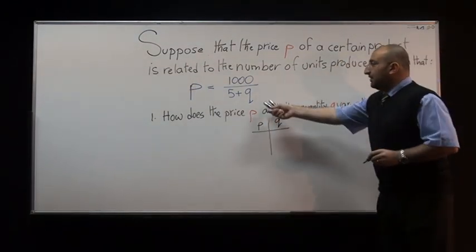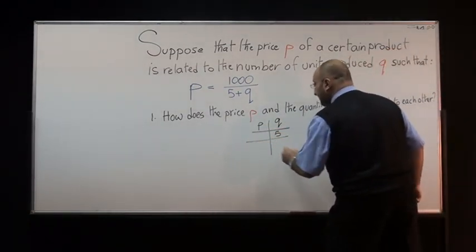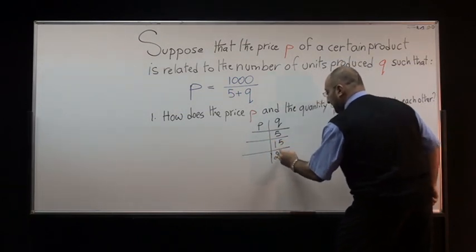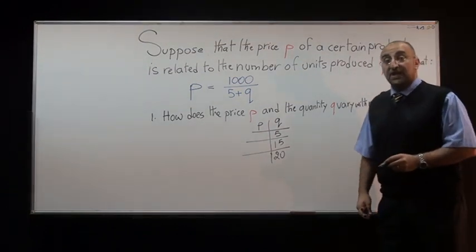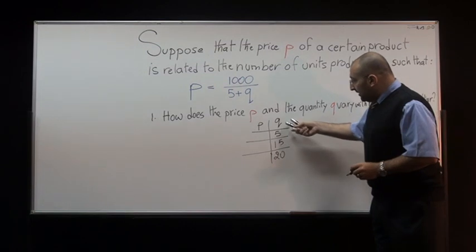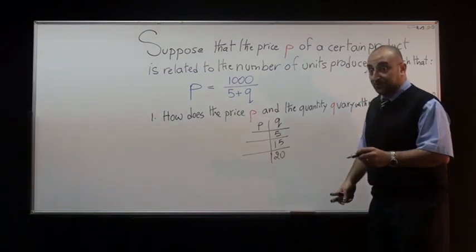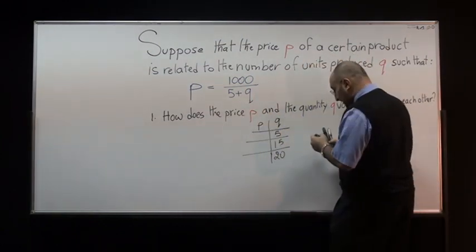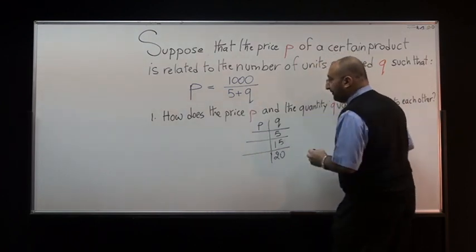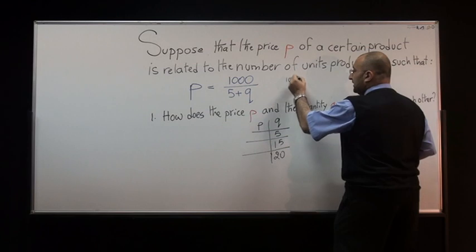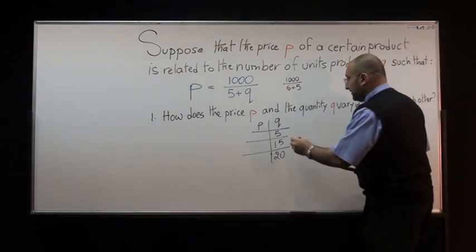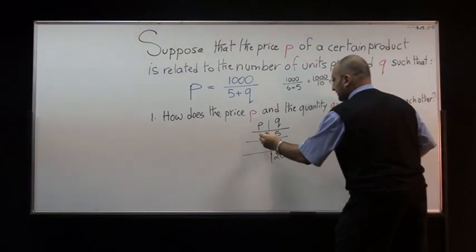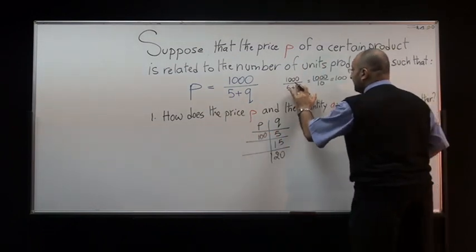I'll take several values for Q — let's say Q equals 5, Q equals 15, and Q equals 20 — just for the sake of example. The values of Q are increasing; we're producing more units. For each one, the values of P are calculated as follows: replacing Q by 5, you get 1000 divided by (5 plus 5), which is 1000 divided by 10, which equals 100.